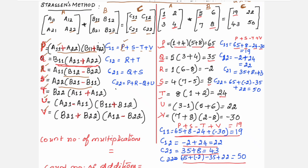Using the same approach: C12 = R + T = −2 + 24 = 22. C21 formula is Q + S, and Q = 35, S = 8, so C21 = 43.